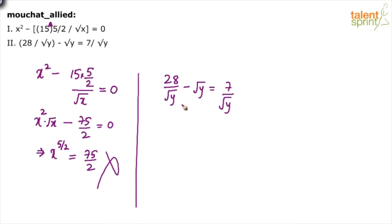Let's look at the second part. If you take root y as LCM, what happens? We will get 28 minus root y into root y, divided by root y equals to 7 by root y. So this gets cancelled, root y into root y is y, so 28 minus y is equal to 7, which implies y is equal to 21.